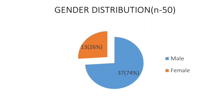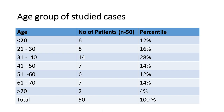In our evaluation, 13% of the patients are female and 37% are male. Regarding age distribution: 6 patients are under 20 years, 8 patients are between 21–30, 14 patients between 31–40, 7 patients between 41–50, 6 patients between 51–60, 7 between 61–70, and 2 patients are over 70 years.